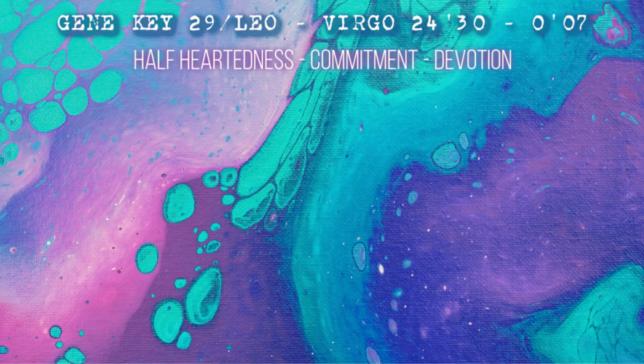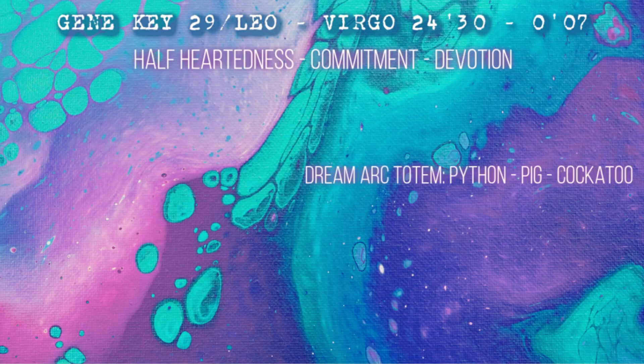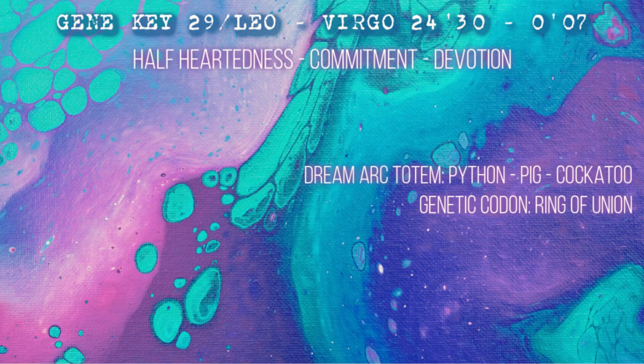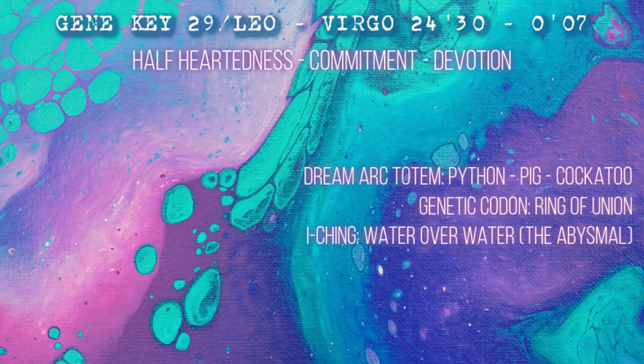It definitely has more of a Leo archetype to it. The shadow of Gene Key 29 is half-heartedness, the gift is commitment, and the siddhi is devotion - leaping into the void. The life key animal is the pig, the fear key underworld creature is the python. In the codon ring, this Gene Key is part of the Ring of Union, associated with the amino acid valine.